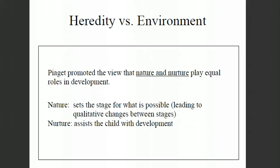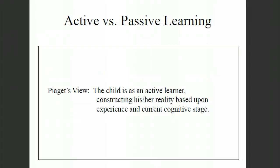First, to set the stage, Piaget felt that both nature and nurture played an important role in a child's development. Nature set the stage for what was possible, and nurture then determined the level of achievement that that child met or accomplished in that particular stage. This is in contrast, for example, to the behavioral psychologist who felt that the environment essentially determined everything about a person.